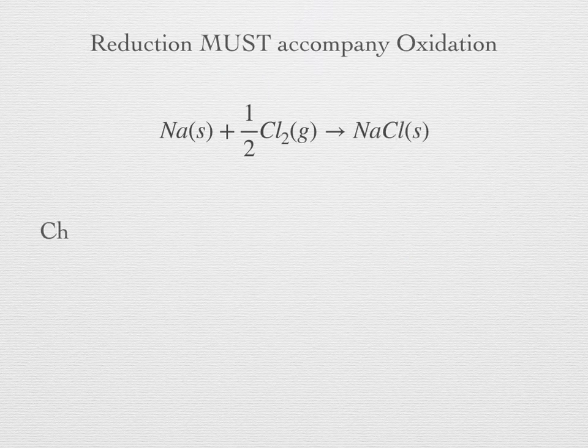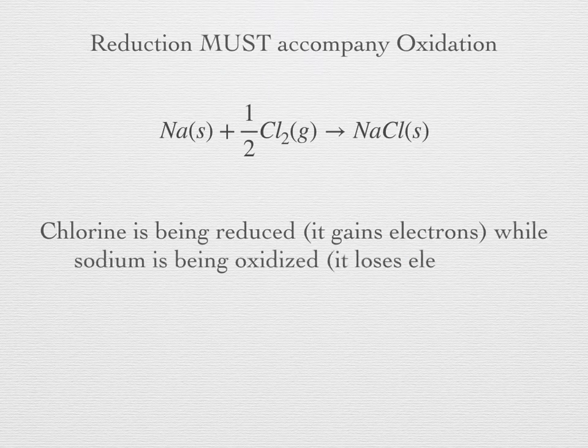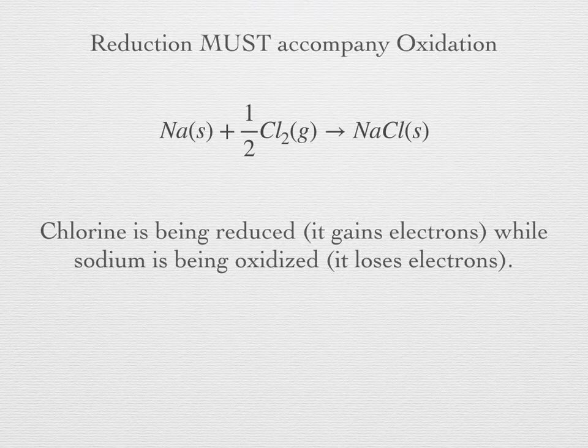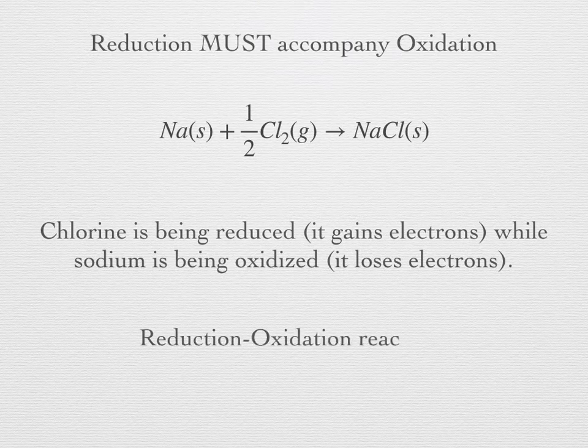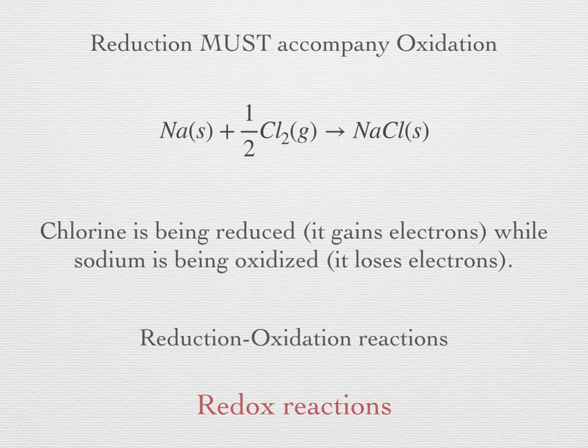In any chemical reaction in which there is such an exchange of electrons, these two processes — oxidation and reduction — must always occur together. If something is being reduced, then something else must be being oxidized; the electrons that come from some place must also go to some place. Since reduction must always be accompanied by an oxidation, we refer to such reactions as reduction-oxidation, or redox reactions for short.